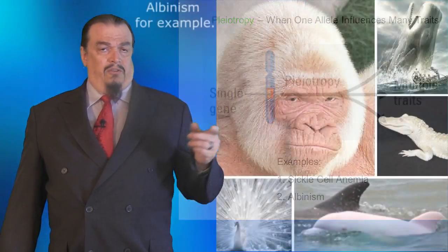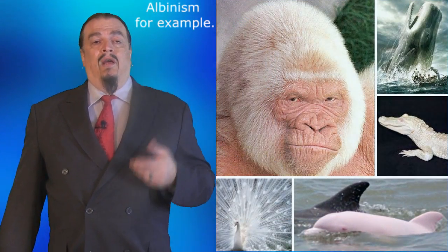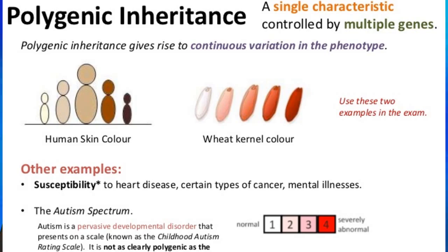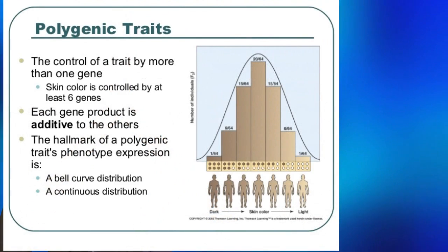This is called pleiotropy. Now let's get even more complicated. Let's have a look at traits that don't just have multiple alleles — they have multiple genes. These traits are called polygenic. As you can see from this diagram, human skin color is controlled by more than one gene. And also this diagram — the same is true for hair color. A lot of people think that the genes for red hair are just a simple recessive trait, and of course it's not that simple.